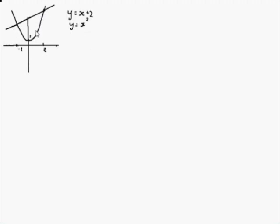We have to integrate y equals x plus 2, find the area under that, integrate y equals x squared, find the area under that, and subtract the area under x squared from the area under x plus 2. Then you'll get this area here.